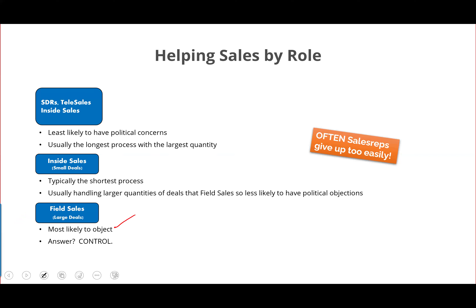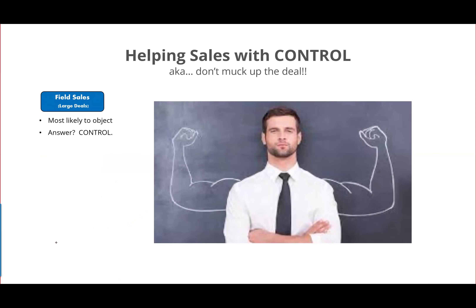So when a sales rep objects, what do you do? Sales reps will and should object if their deals might be derailed by a poorly timed email. The answer is control. How can you empower your sales department with control — not only enable nurturing while selling, but make it so that salespeople have personal control to nurture when it's appropriate and not nurture when it's not?